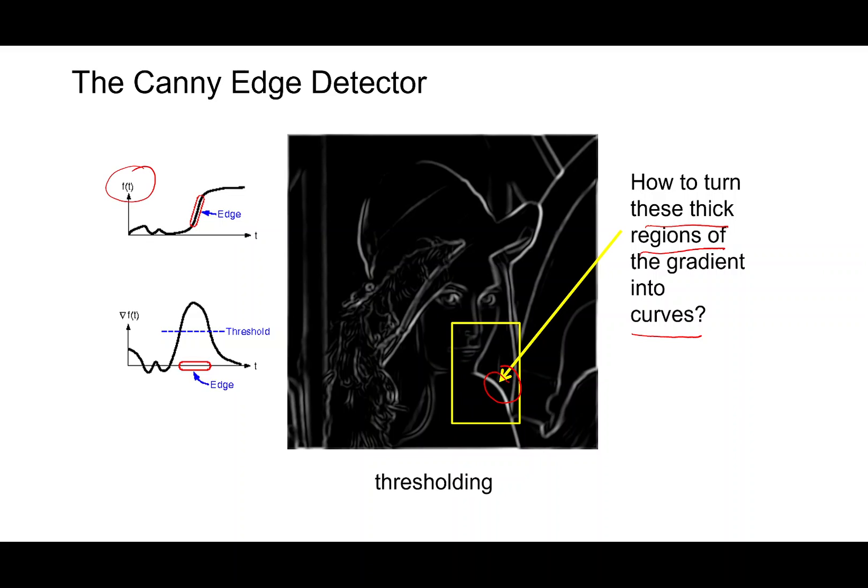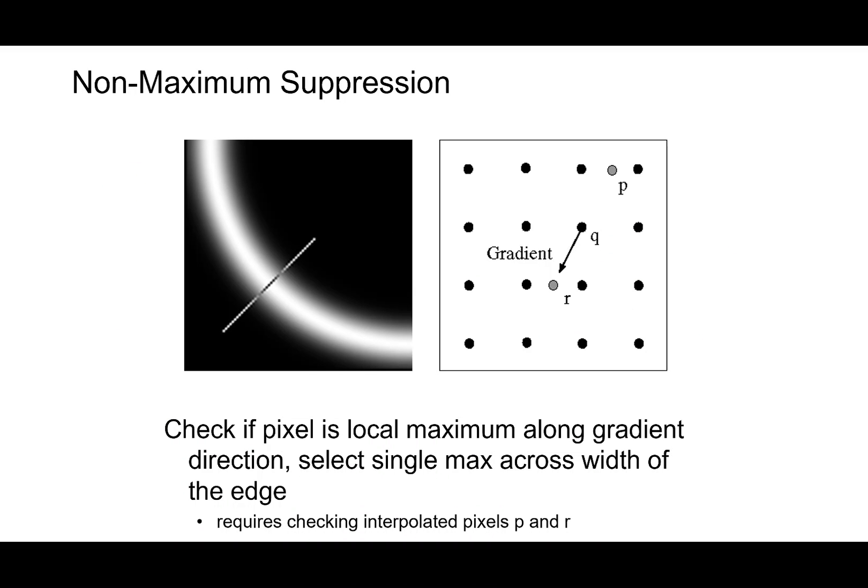Now if you look at the image function, this is the spatial one-dimensional image. For example, now this is a transition. There would be a positive gradient due to that and your threshold. But still, you can see there is some width to this edge. In order to get rid of this thick high gradient points and convert them to a single pixel thin line, what we do is we consider perpendicular directions to these gradients. And along the perpendicular directions, you find the maximum point.